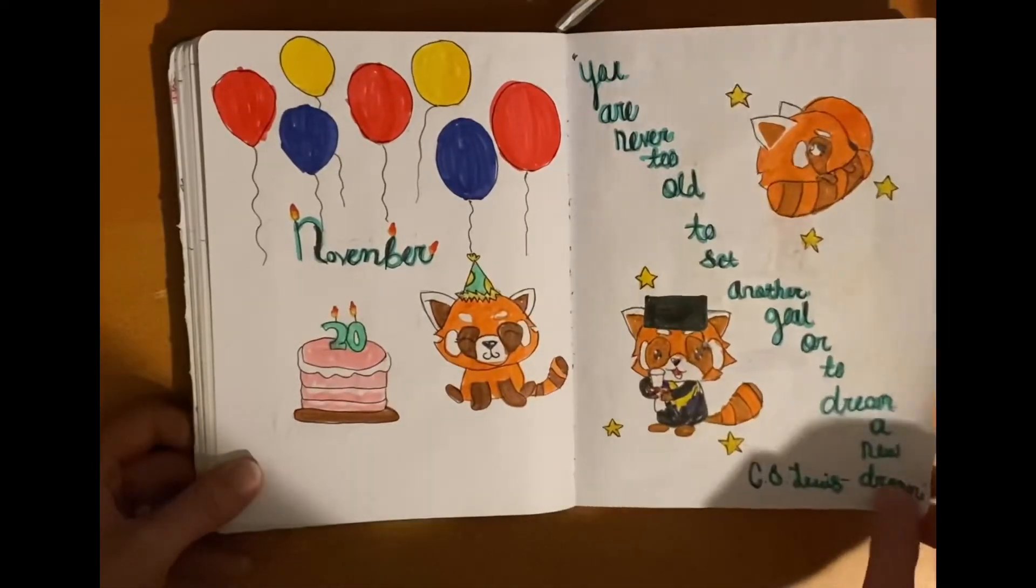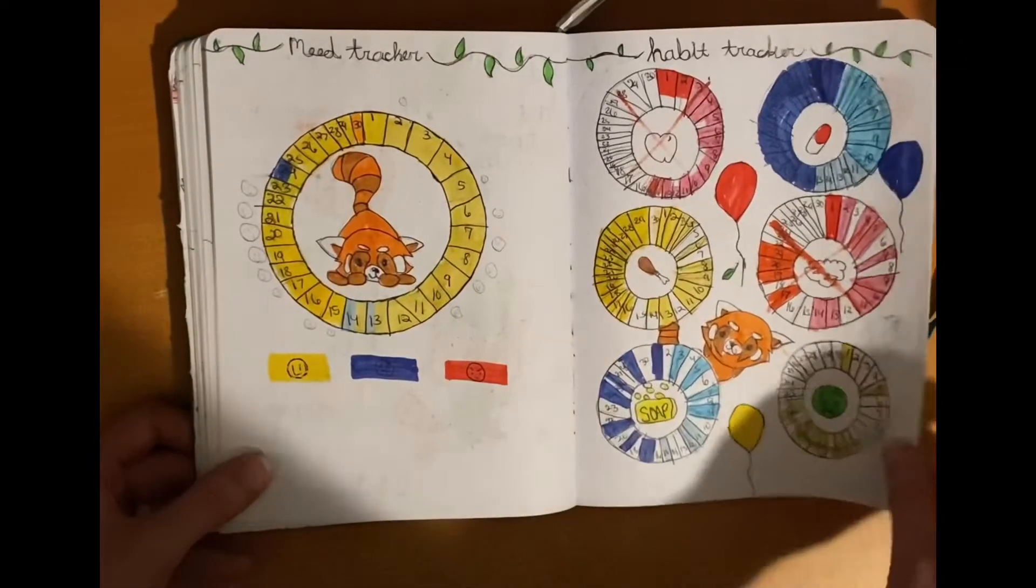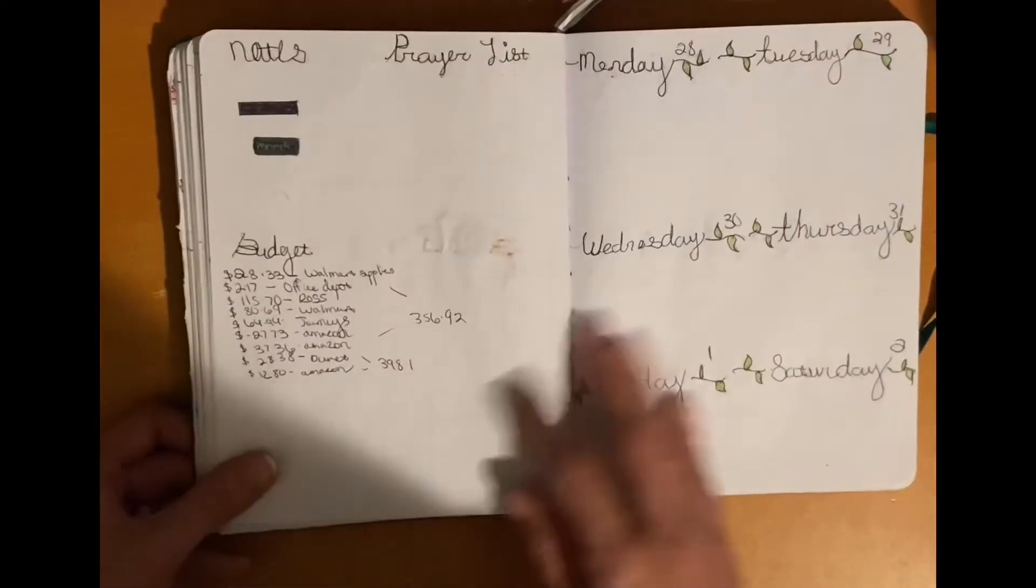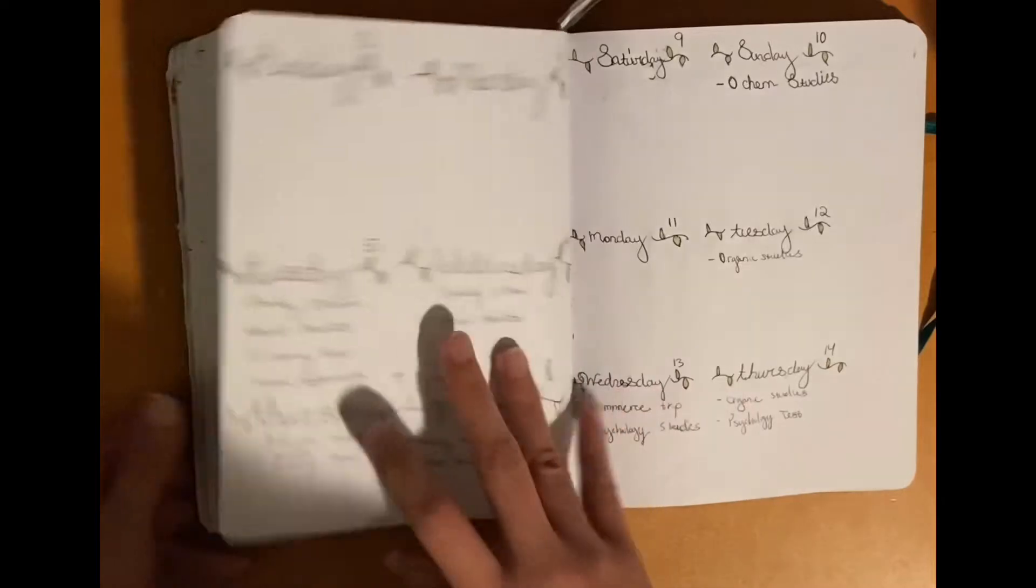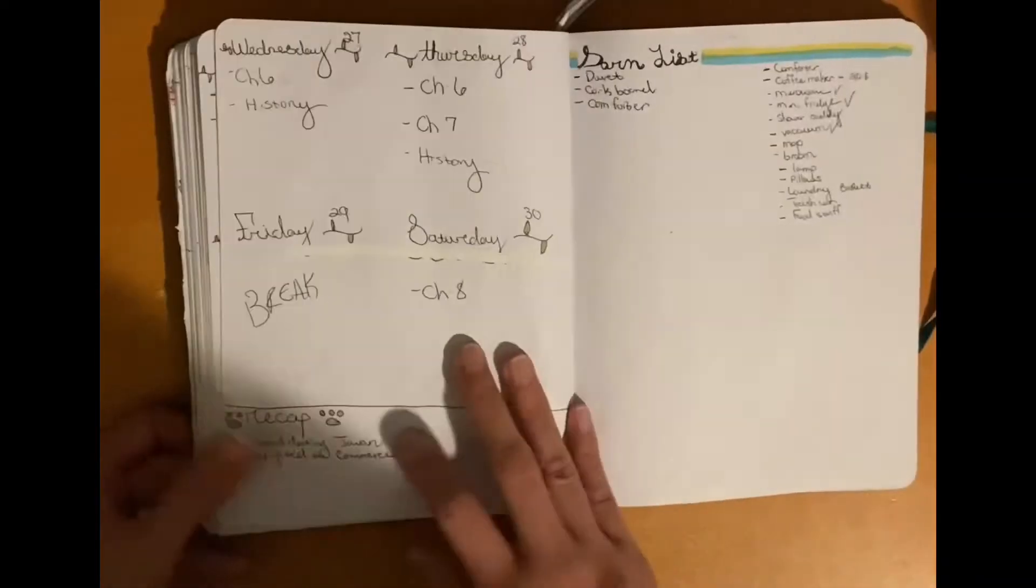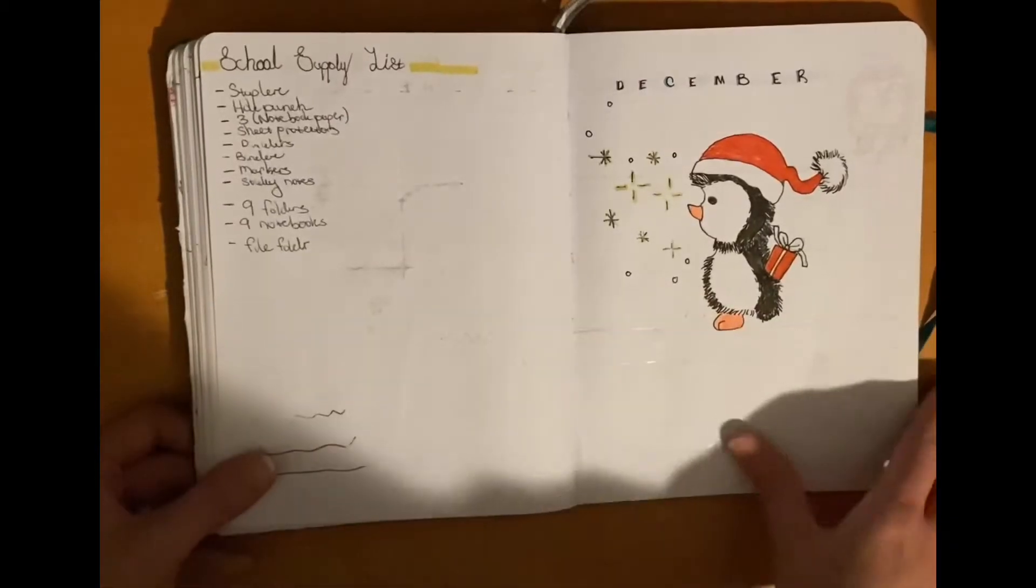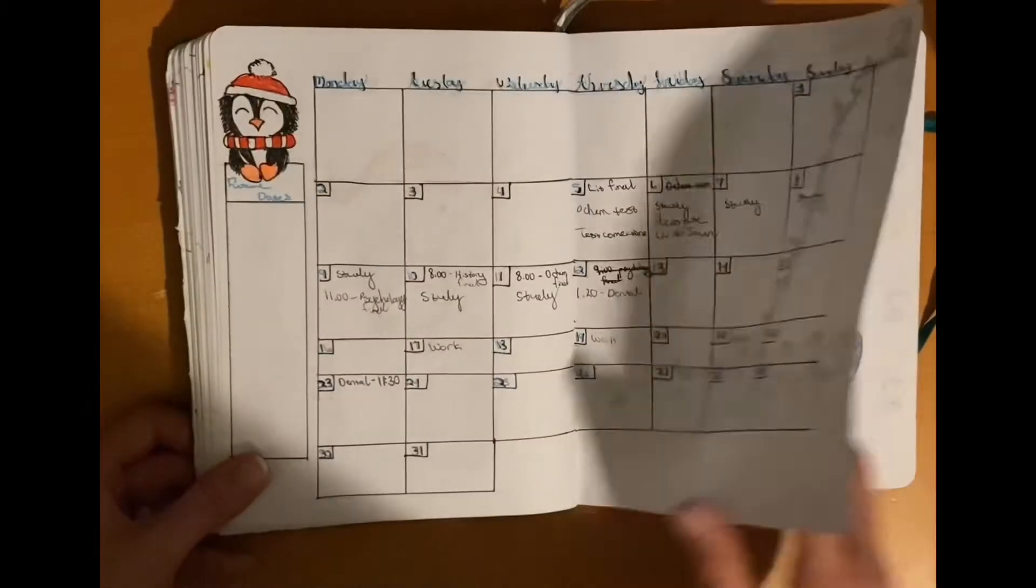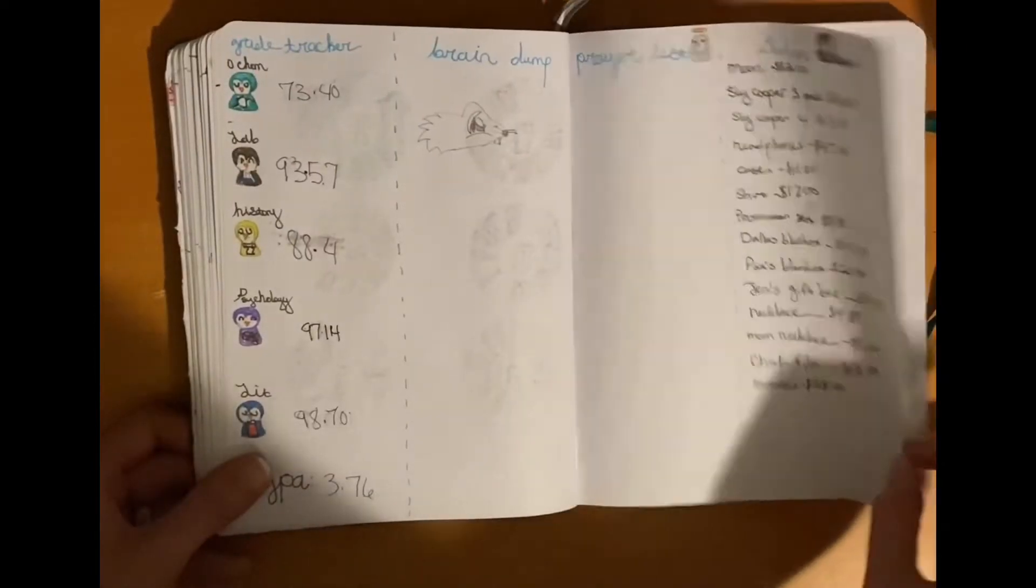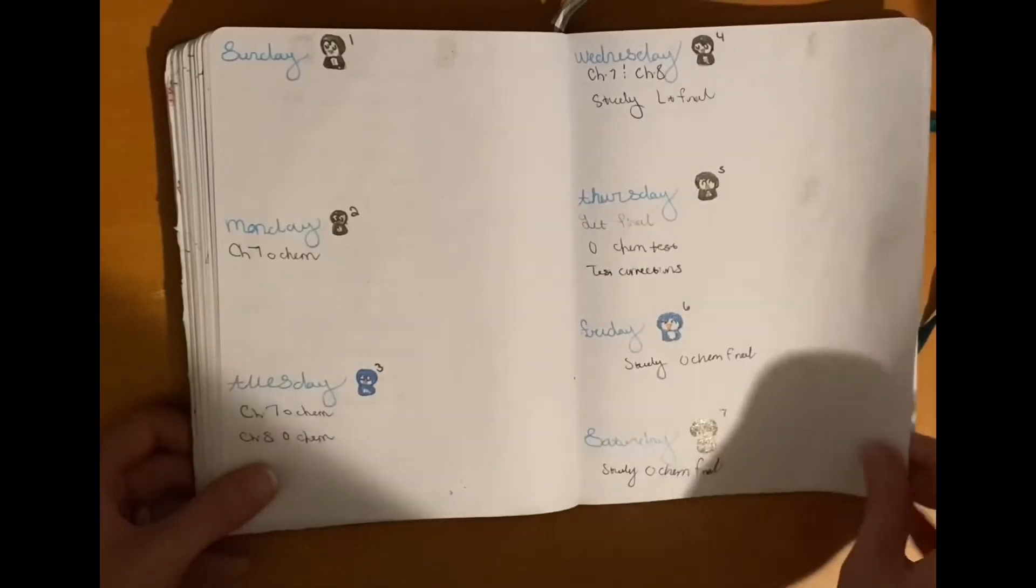Then moving on to November, yay my birthday month! So of course I had to go all out with this red panda theme. As you can see, I still use mostly just pens and a little bit of color every now and then with these themes. I don't think it was until January of the next year that I actually had the Tombows and started really digging deep into it. So it was mostly just gel pens and stuff that I used for these themes.